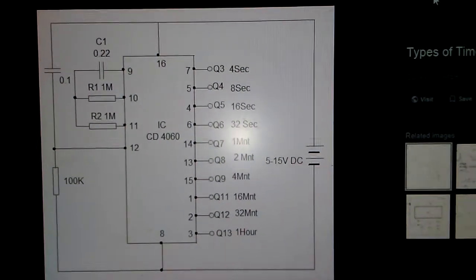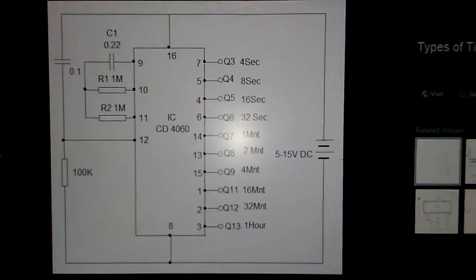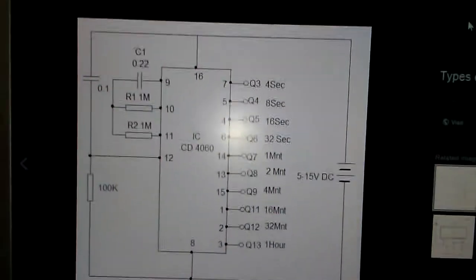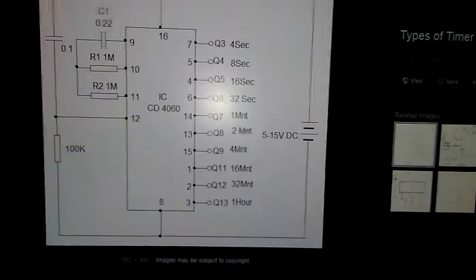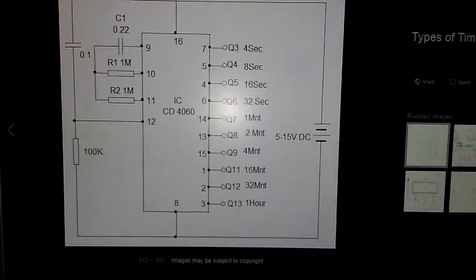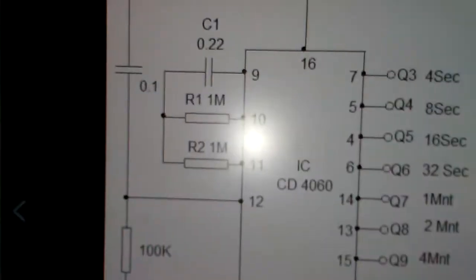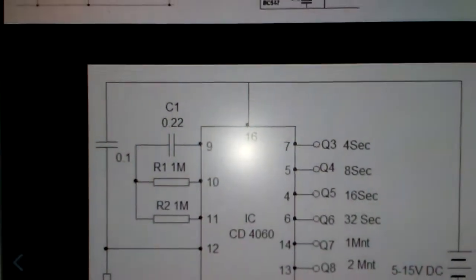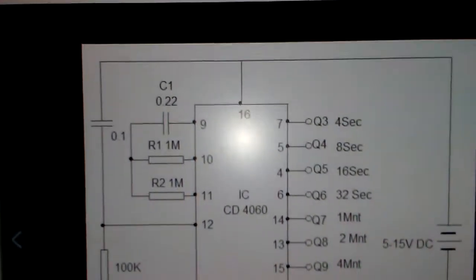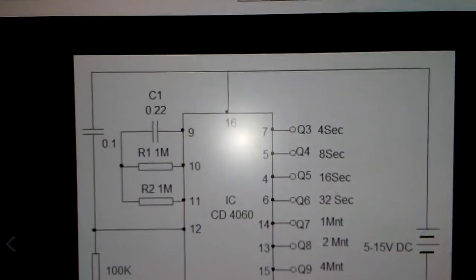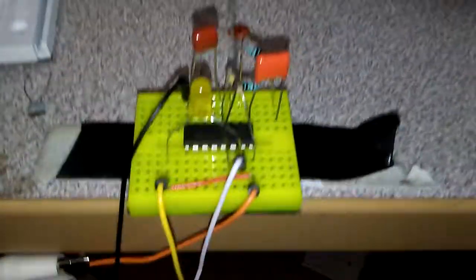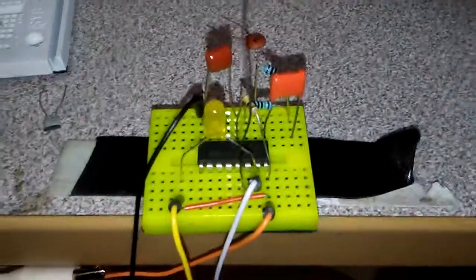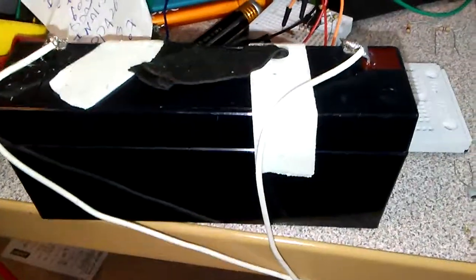Pin seven, five, four, six, one, two, and three are the outputs, and the voltage needed is five to fifteen volts. Pins nine, ten, and eleven are the oscillator part. If you change this part with a crystal oscillator, it's much better with more stability and less power usage. I'm using a 6.2 volt battery as the power source.